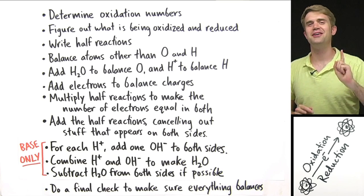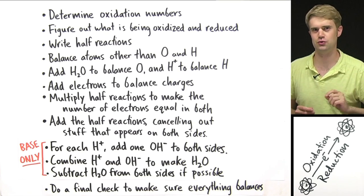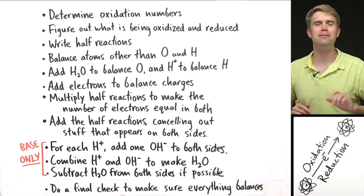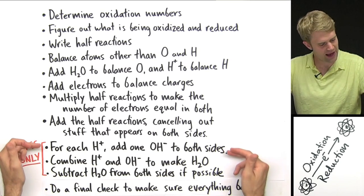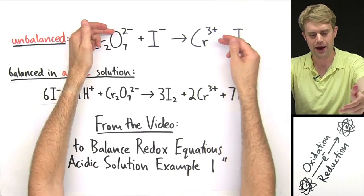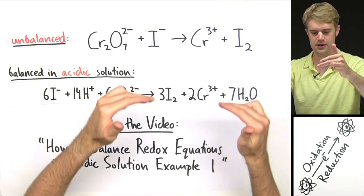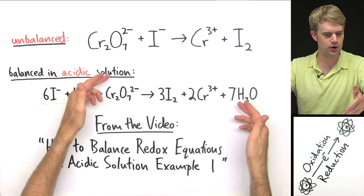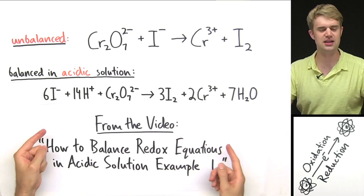I made two practice problem videos for balancing redox equations in acidic solution, showing how to get through those steps. Now I'm going to take the two equations I used in those videos and work them through these extra steps to balance them in basic solution. Here's our first equation — I showed how to balance it in acidic solution in a previous video. Now I want to take the equation already balanced in acidic solution and make changes to balance it in basic solution.